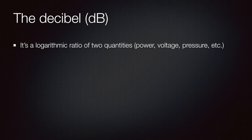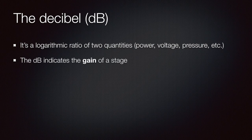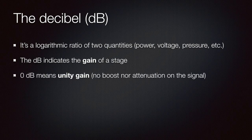It's a logarithmic ratio of two quantities. This could be power, voltage, pressure, etc. In general, we can say that a dB or decibel indicates the gain of a stage, the gain of an amplifier or maybe a processor, and so it's measured in dBs.